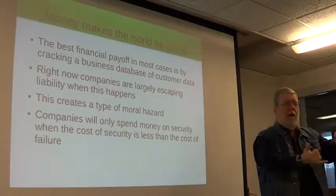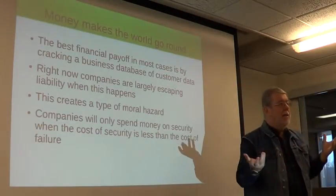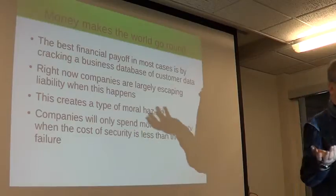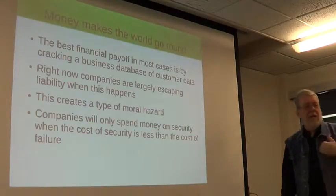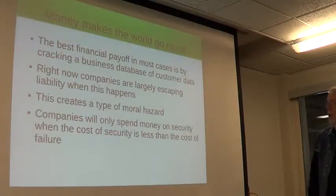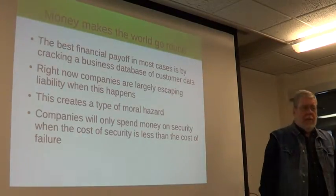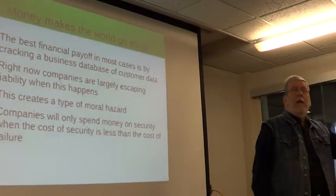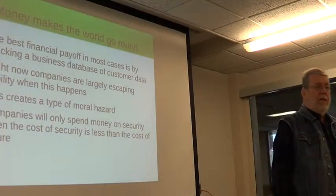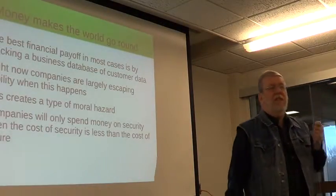Recent ones: Home Depot, Target, Jimmy John's, Kmart. A lot of it is through point of sale systems, because they're connected to the corporate network without good segregation — that's the weak entry point crackers can use. One of the big problems is that companies are largely escaping liability. Target is being sued by a number of banks saying they shouldn't have to bear the cost, because Target was not following best security practices — they were negligent.